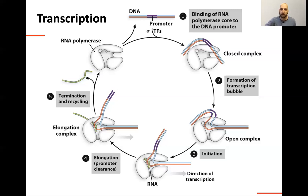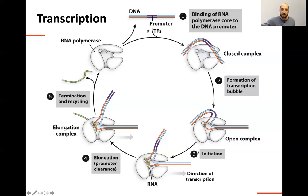I'm going to highlight the first three steps. Step one: binding of sigma factors, transcription factors, and the RNA polymerase to the DNA. Step two: separating of the strands — going from a closed complex to an open complex. And then there's the process of initiation, which is really starting to form that transcript. We're going to talk about that as part of this video.